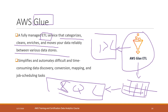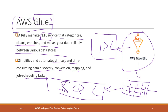The best part of Glue is that it can do ETL automatically. It simplifies and automates difficult and time-consuming data discovery, conversion, cataloging, and job scheduling tasks. In today's lab we will see how Glue can help us do that from the background — you may not even realize it is doing the job.